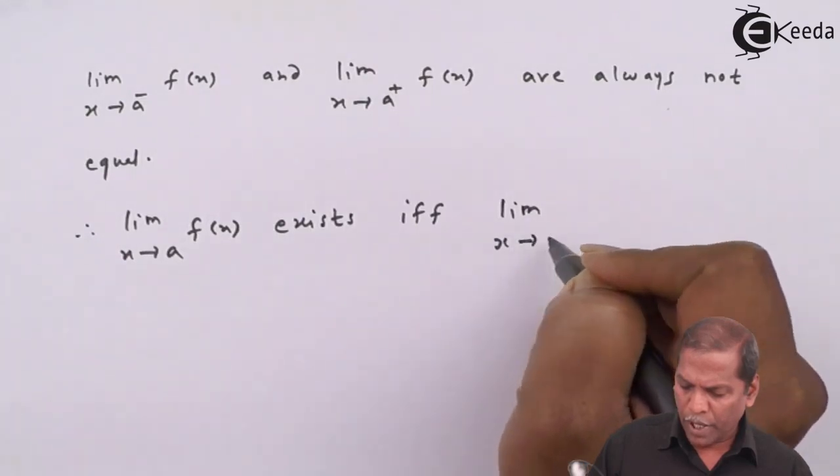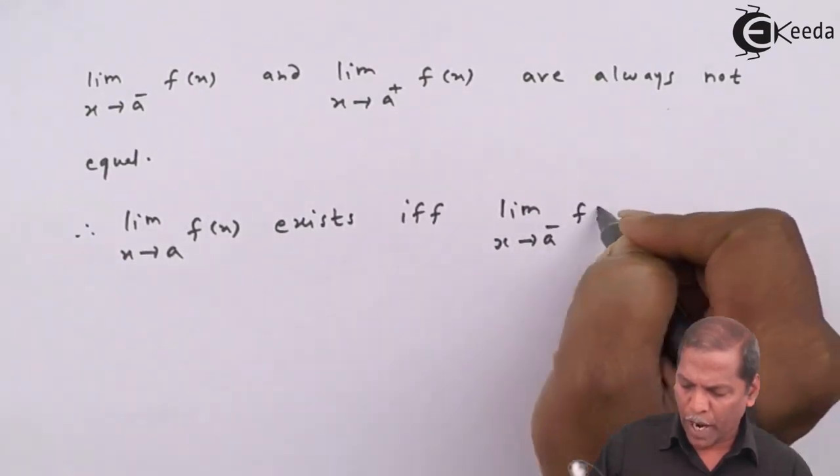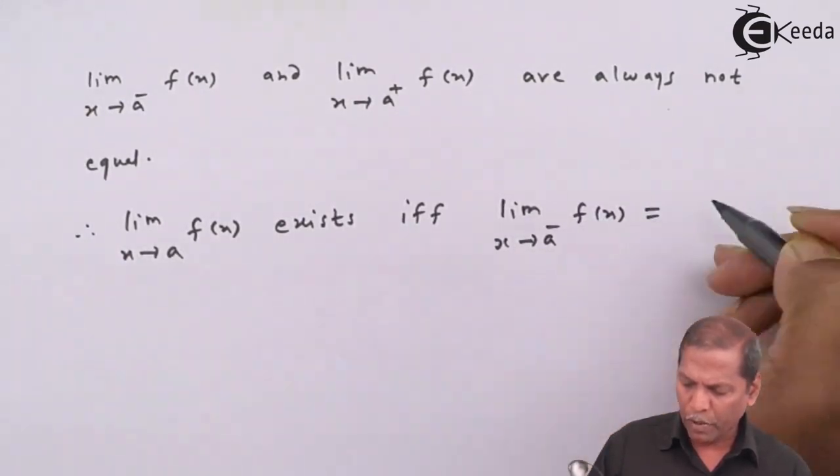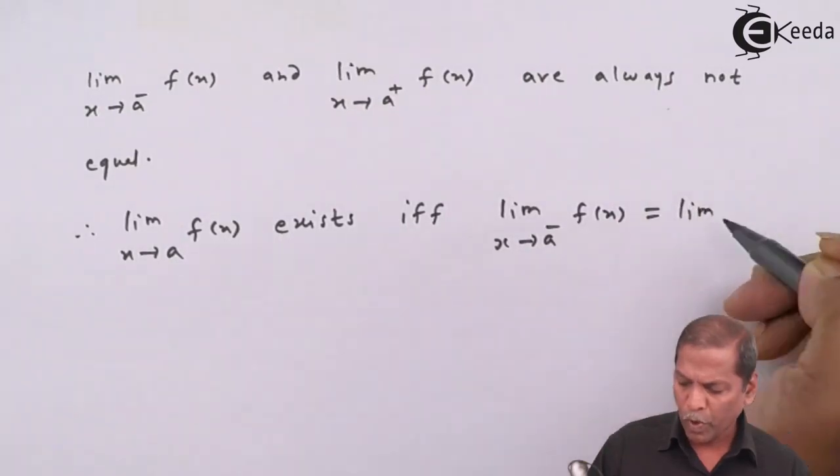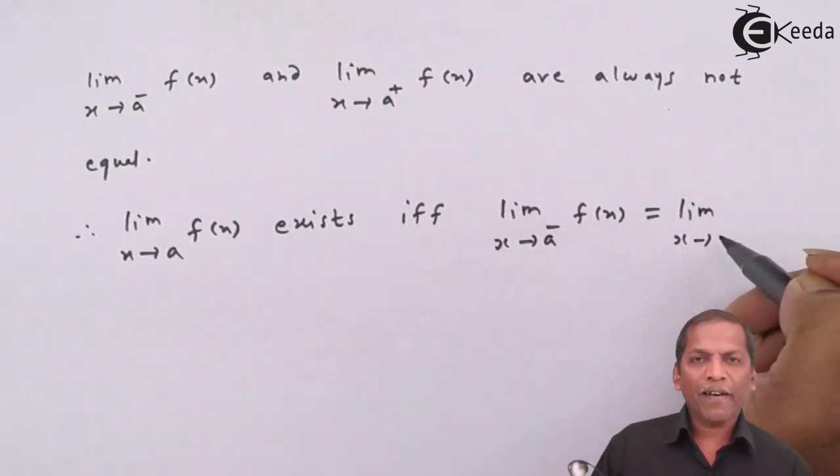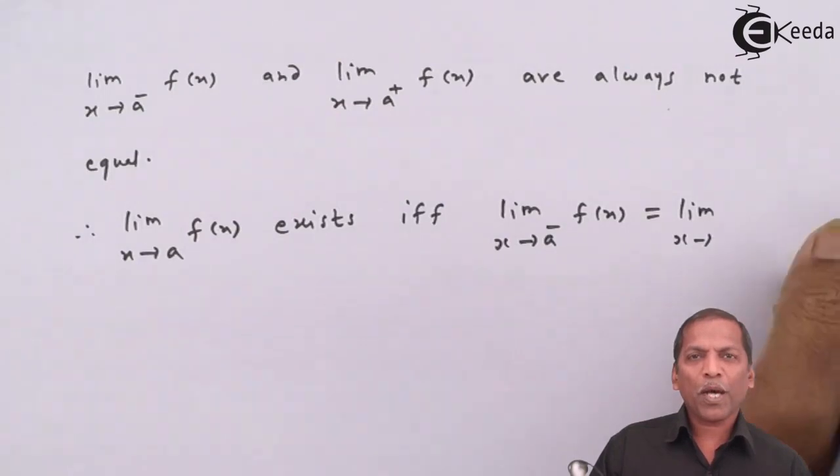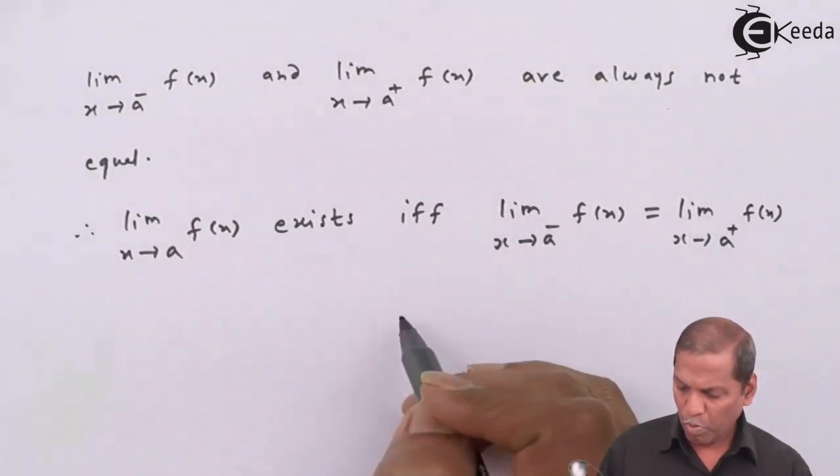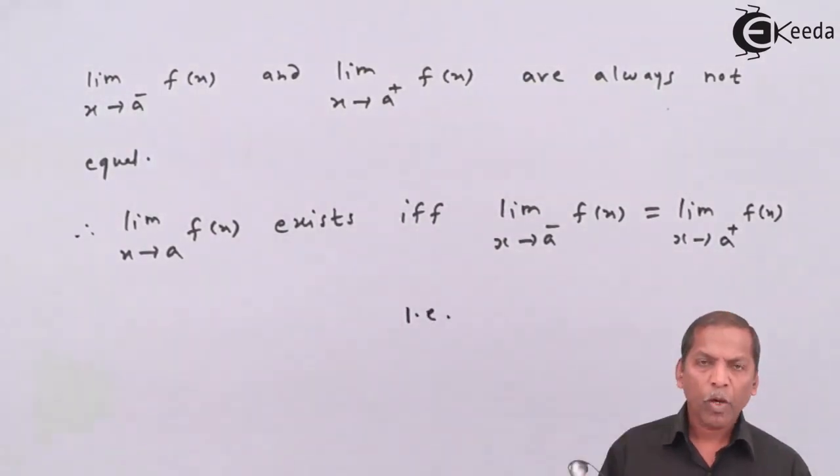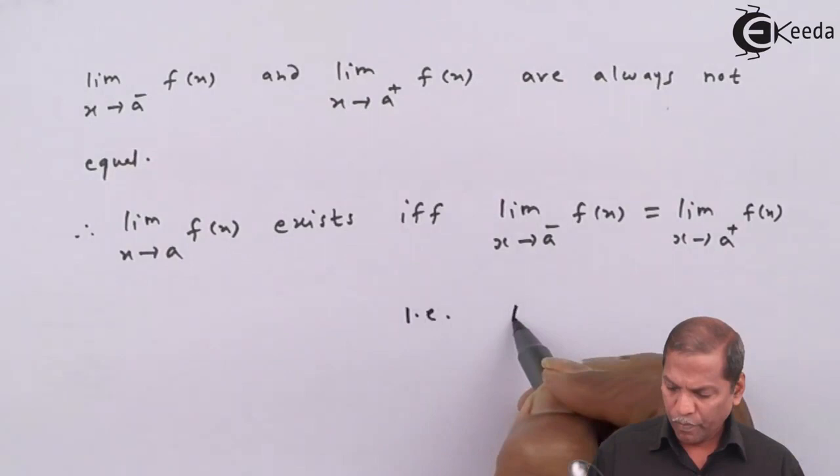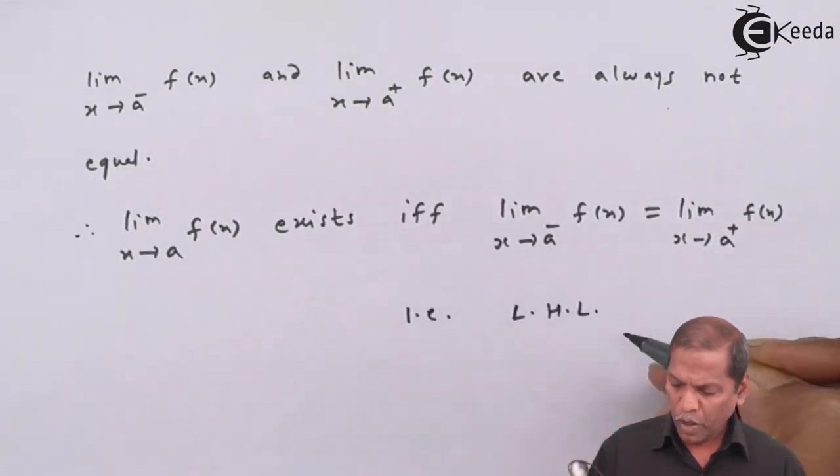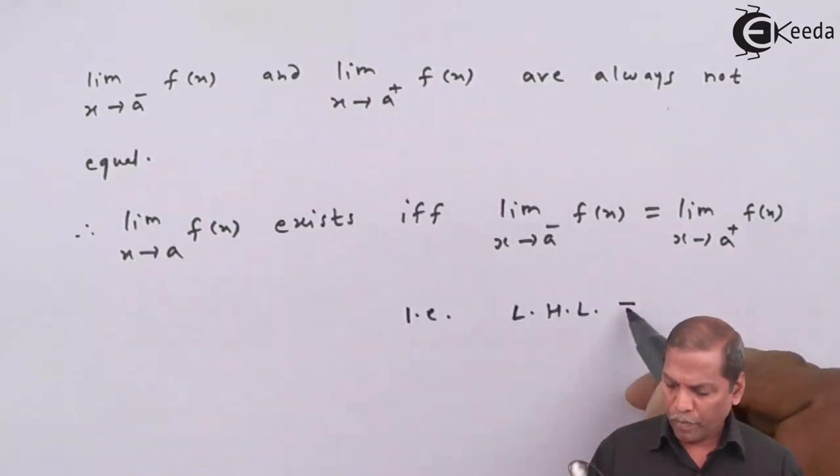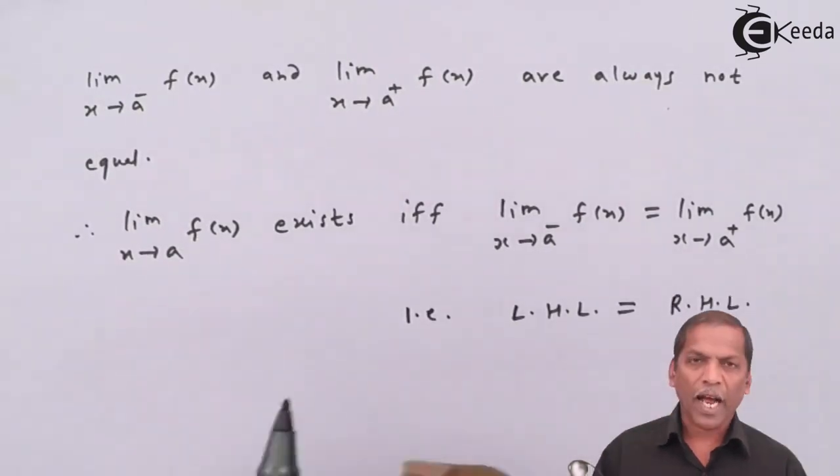That is, limit x tends to a minus f(x) should equal limit x tends to a plus f(x). The left-hand limit must equal the right-hand limit.